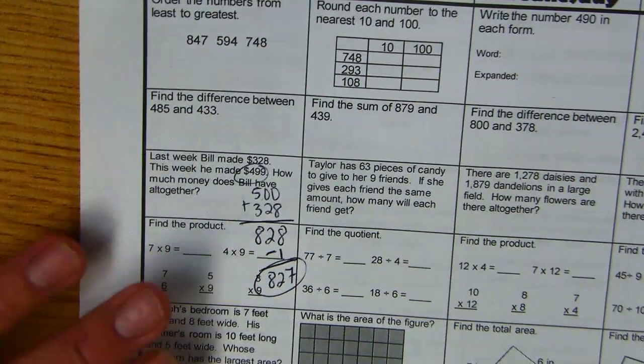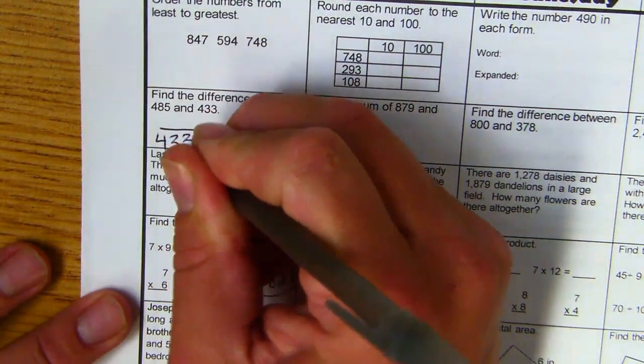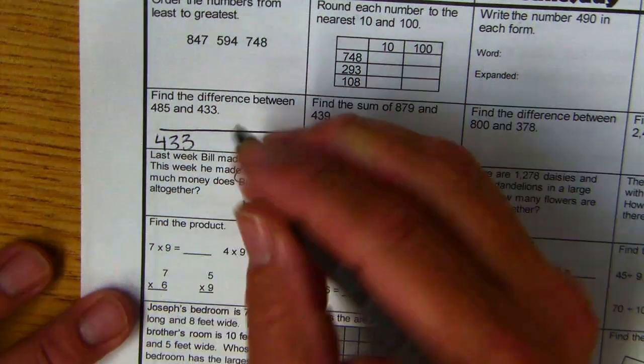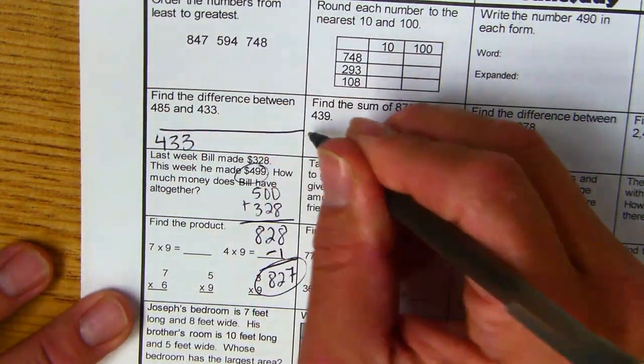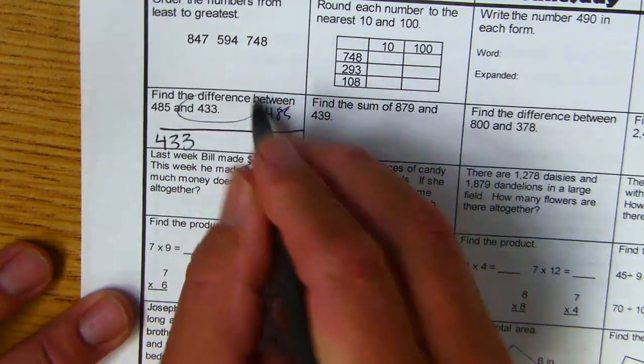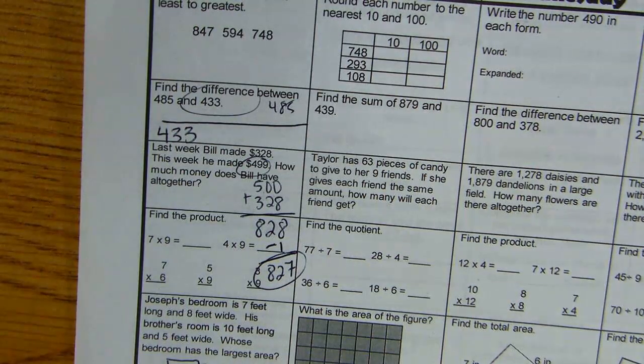Okay, find the difference. Most of you can add better than you can subtract, so why not start at 433 and then jump your way to 485, and then you're just going to count your jumps. So you can find the answer to a subtraction problem by adding.